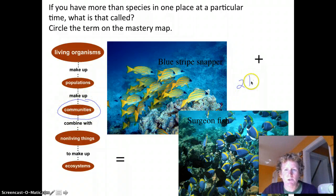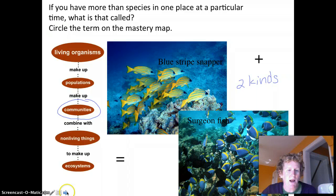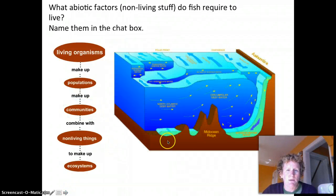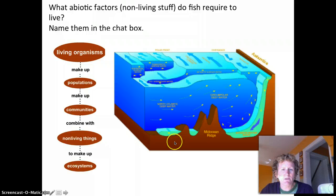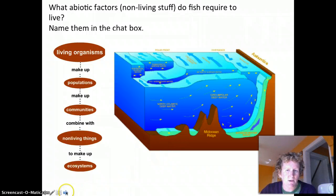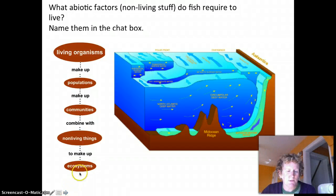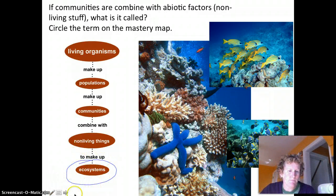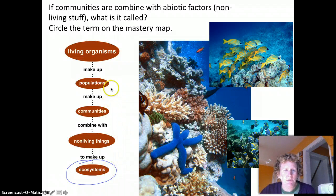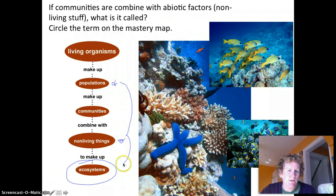If you have more than one species in a place at one time, then you have a community — for example, two kinds of fish together. If we combine a community with non-living things like rocks, water, dissolved oxygen, and minerals that support plant growth, we get an ecosystem. So populations plus non-living things added together give you ecosystems.